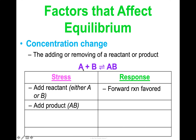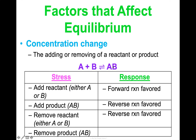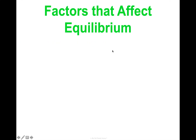If we add more product AB, to balance it out, it's going to favor the reverse reaction — shifting to make more reactant. If I remove reactant A and B, it's going to want to make more of that, so it favors the reverse. If I remove product AB, it's going to want to make more of that to compensate, so it favors the forward direction. You just have to predict which direction will be favored — forward or reverse — to keep the reaction in equilibrium.